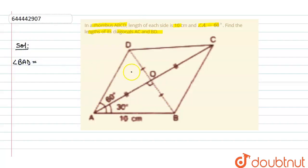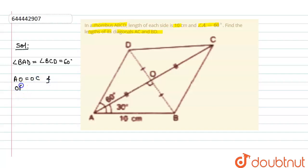Angle BAD and angle BCD is 60 degrees. The diagonals of a rhombus or parallelogram bisect each other, so AO equals OC and OB equals OD. Now in triangle AOB, this is a right angle triangle.